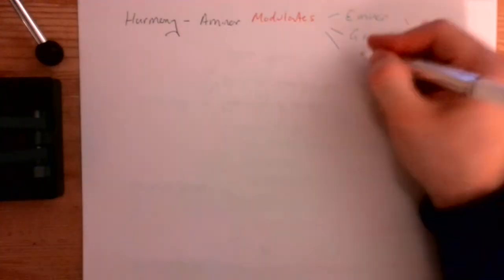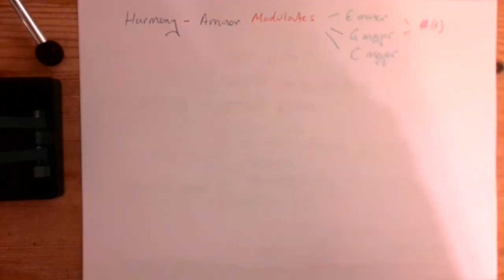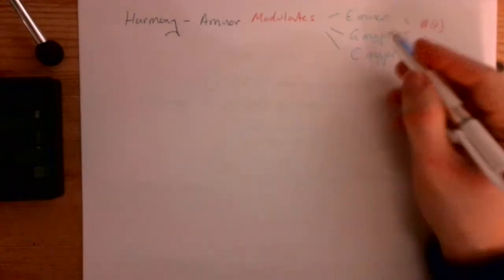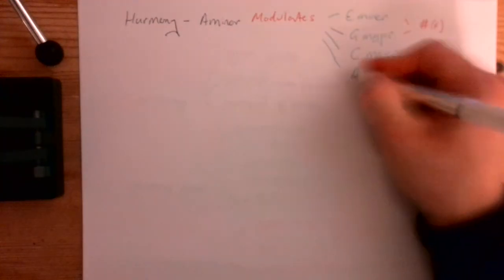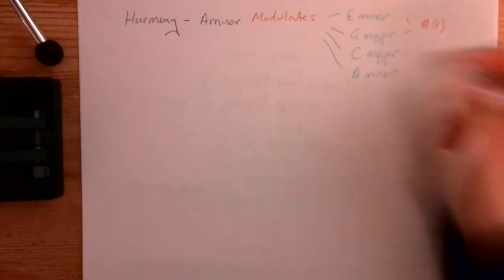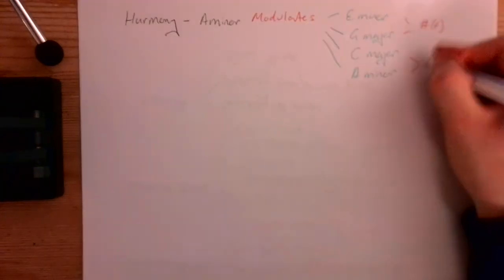We then have it go to C major, which will be G as its dominant, so it goes to C, and then that goes back to A minor, which is the relative minor of C major, which has no sharps or flats.